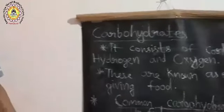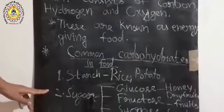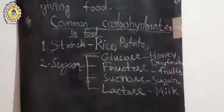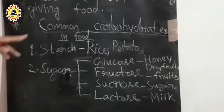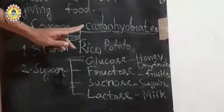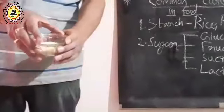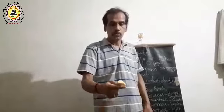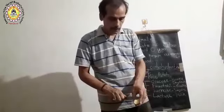Carbohydrates are of two types: first, starch; and second, sugar. These are the common carbohydrates found in food. Starch is present in food items such as rice and potato.